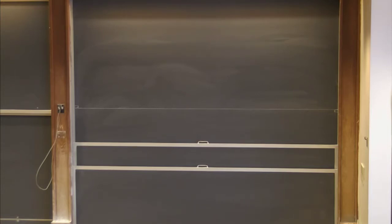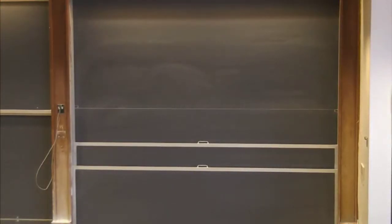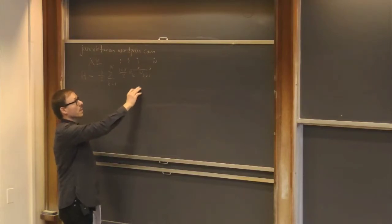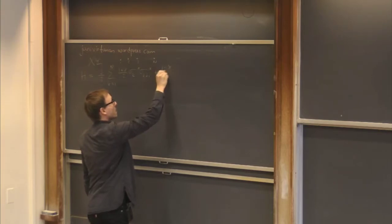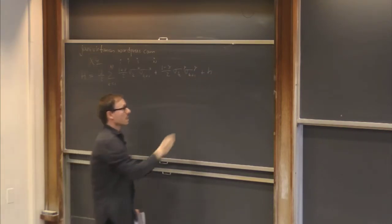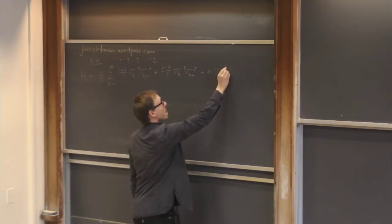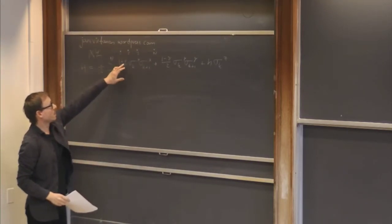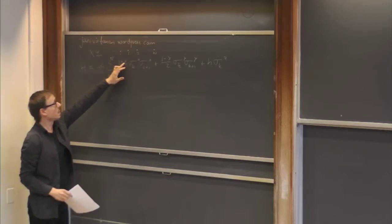Let me remind you of the Hamiltonian. So we have a one-dimensional system with some lattice sites, going up to some n, so k equals 1 to n. We have a parameter — I will specify what we mean by this — and we have just the nearest-neighbor interactions. Here sigma_k^x and the next one are the Pauli matrices acting on spin-1/2 operators on each lattice site.